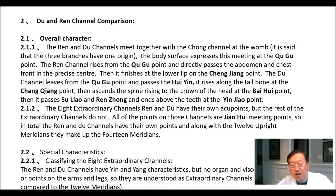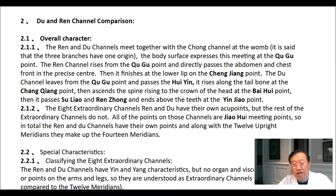Du and ren channel comparison — overall character. The ren and du channels meet together with the chong channel at the womb. It is said that the three branches have one origin. The body surface expresses this meeting at the chu gu point. The ren channel rises from the chu gu point and directly passes the abdomen and chest front in the precise center, then finishes at the lower lip at the cheng jiang point.